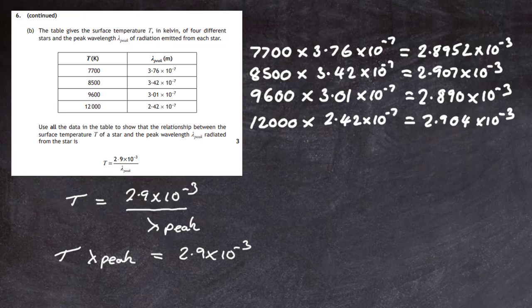You can see from the answers: 2.8952 times 10 to the minus 3, 2.907 times 10 to the minus 3, 2.890 times 10 to the minus 3, 2.904 times 10 to the minus 3. We can see that if we go to just two significant figures, we'll have a definite relationship that the temperature times the lambda peak is definitely going to be equal to that value there, 2.9 times 10 to the minus 3. Therefore we have proved it. You can do a graph of that, but I'd strongly urge you not to do that. Just stick with the numerical data, use all the data, round up to get the 2.9 times 10 to the minus 3. T times lambda peak does equal 2.9 times 10 to the minus 3, and therefore your relationship holds.